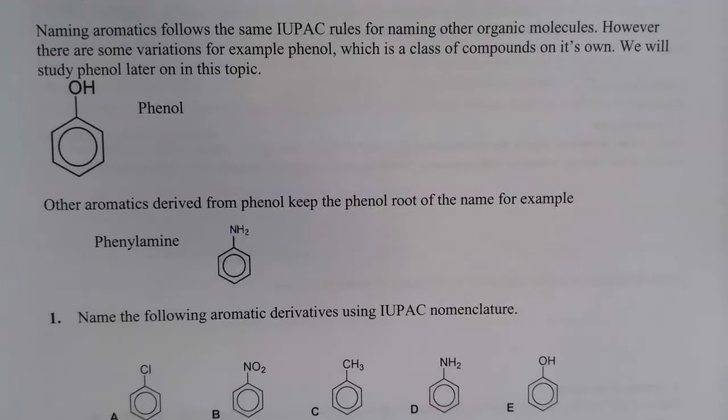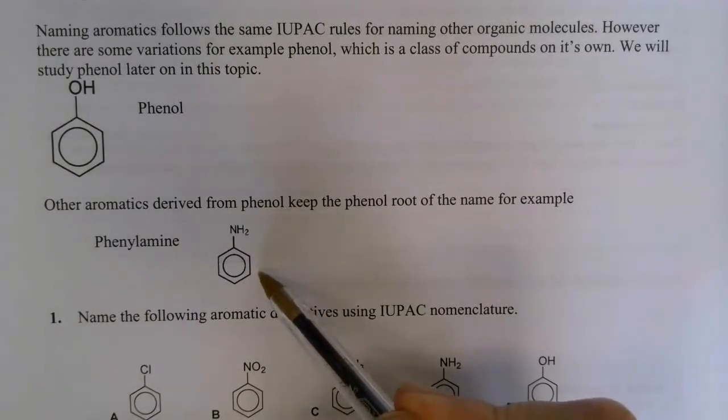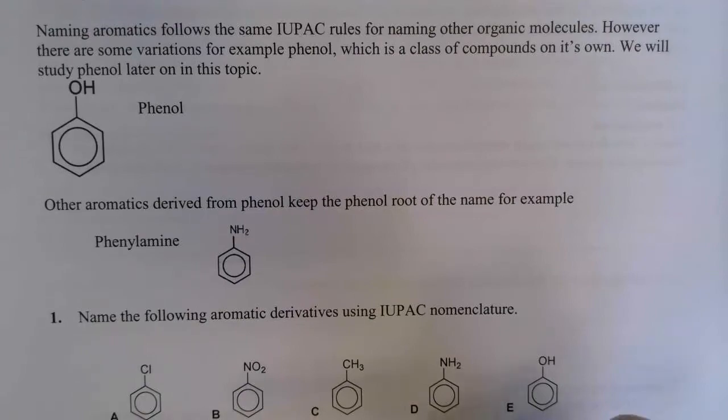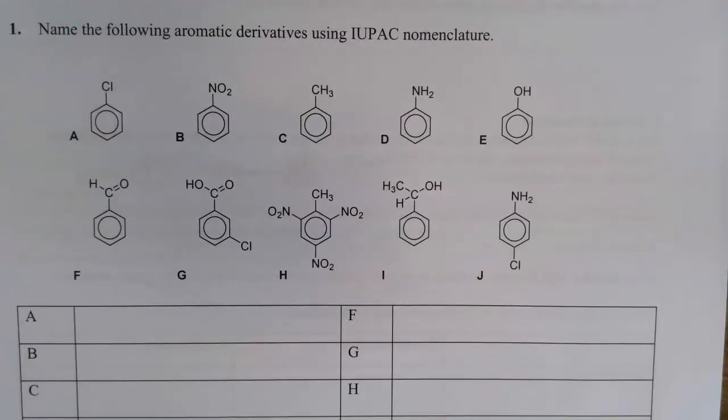The first one you need to know that you have to learn is phenol. We're going to study phenol later in this topic, and like benzene it is a functional group all on its own. It doesn't show the typical reactions of an alcohol so it has its own special functional group. That one's phenol with the OH group coming off the ring. Some aromatics derived from phenol keep the phenol root. For example, this compound here is called phenylamine, the NH2 with the benzene ring attached to it. Most of the others you can name using your IUPAC nomenclature just like you did at lower sixth. So I'd like you to pause the video and have a go at naming these compounds.